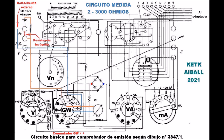La resistencia incógnita se conecta entre los terminales primero y segundo de la izquierda, y se pone un cortocircuito entre los terminales primero y tercero. El polo activo del ohmímetro lleva una pila de 4,5 voltios en corriente continua en serie.